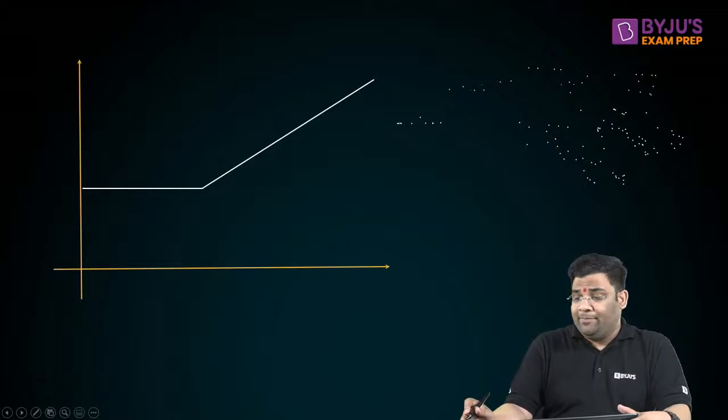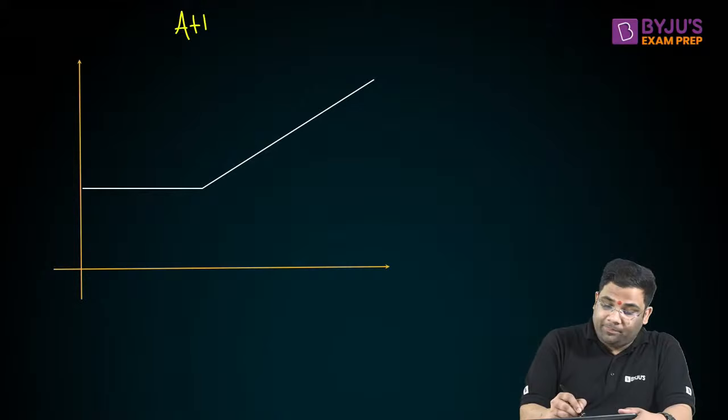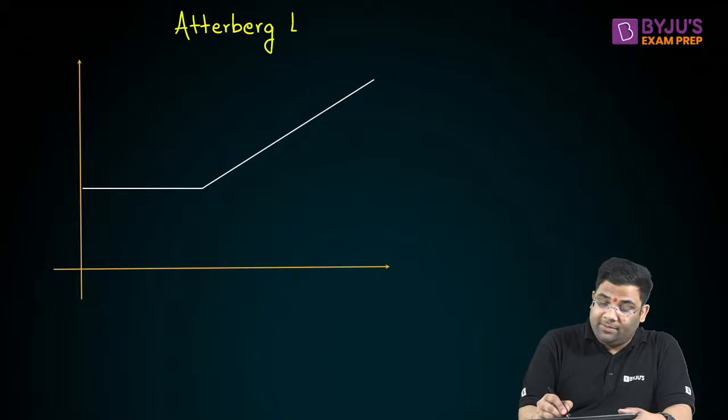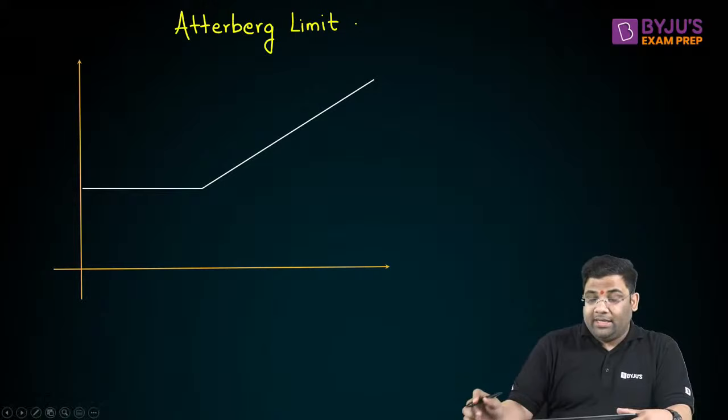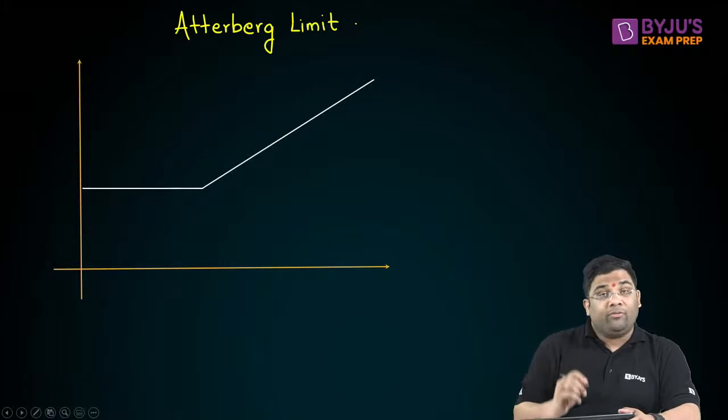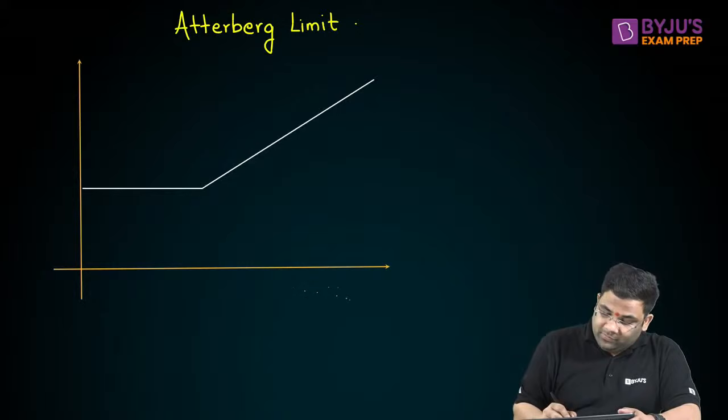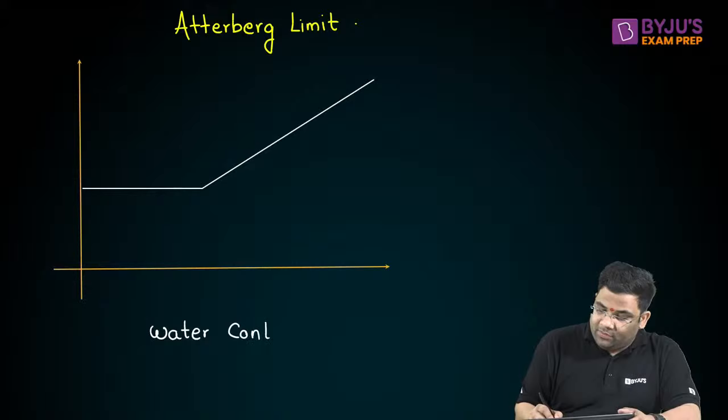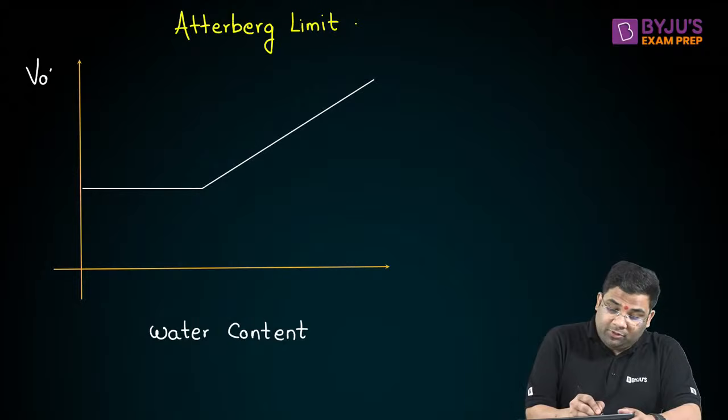We will start with a topic known as Atterberg limits. There was one gentleman known as Atterberg. What Atterberg did was he plotted a curve or graph between water content and the volume of soil. On the X-axis he plotted water content, and on the Y-axis he plotted the volume of soil.